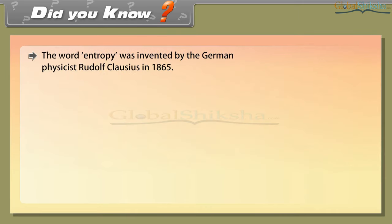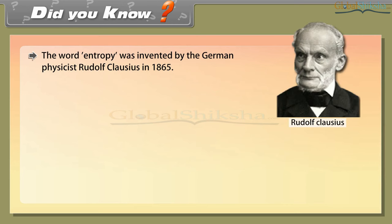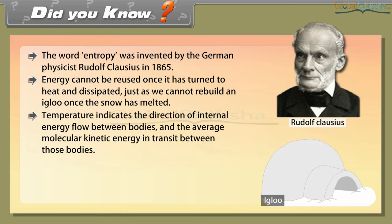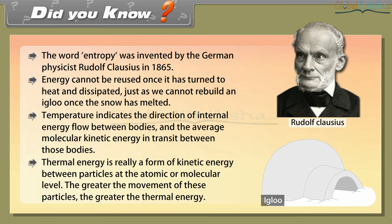Did you know? The word entropy was invented by the German physicist Rudolf Clausius in 1865. Energy cannot be reused once it has turned to heat and dissipated, just as we cannot rebuild an igloo once the snow has melted. Temperature indicates the direction of internal energy flow between bodies and the average molecular kinetic energy in transit between those bodies. Thermal energy is really a form of kinetic energy between particles at the atomic or molecular level; the greater the movement of these particles, the greater the thermal energy.